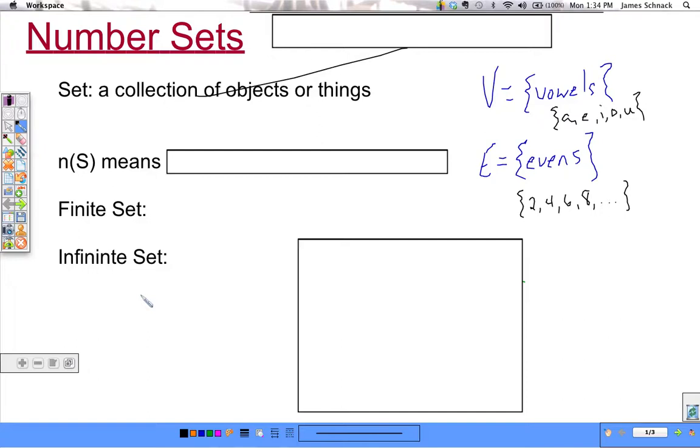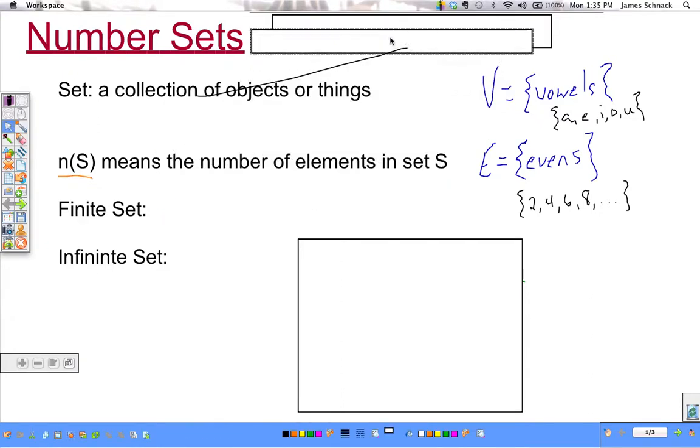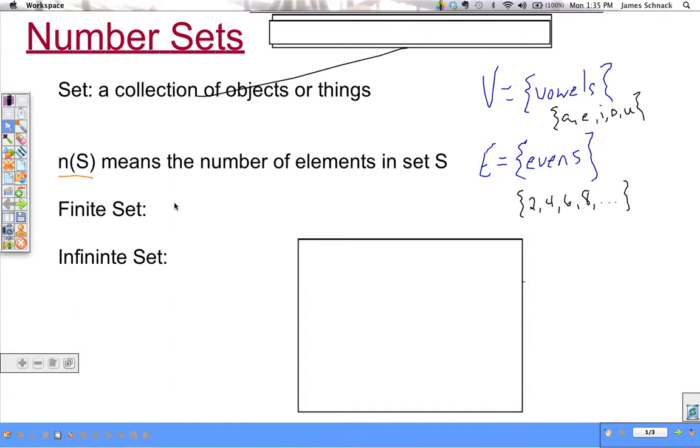When we talk about how big a set is, there's two types. There's a finite set and there's an infinite set. And we can tell which one is which, if we have a finite or an infinite, based on the number of items in that set. And that's what n(S) means.